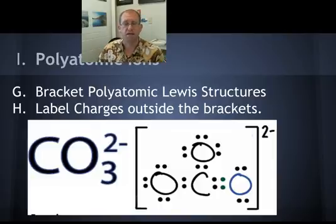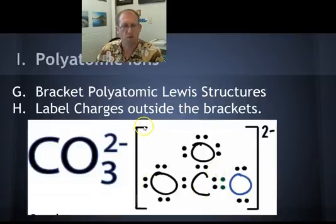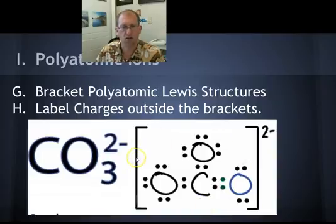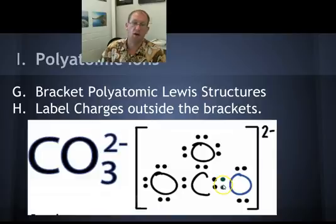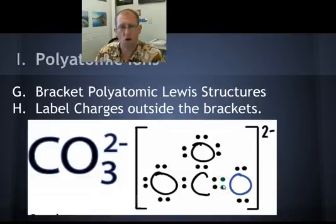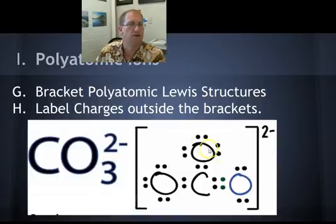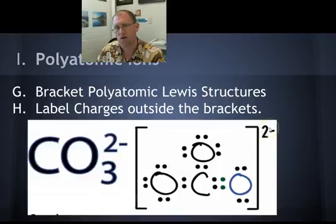When we draw these things, we draw the Lewis dot structure like before, but then we bracket the Lewis dot structure and write the charge outside the bracket. We're saying that this structure has stolen two electrons from the environment. They identified which two in the Lewis structure, but you have no way of knowing exactly where those electrons landed — there are just two of them in here somewhere, stolen from the environment. So we have a negative two charge.